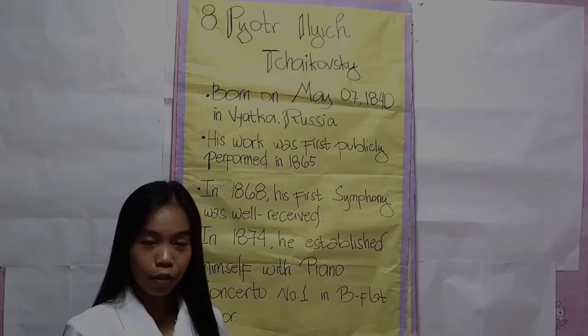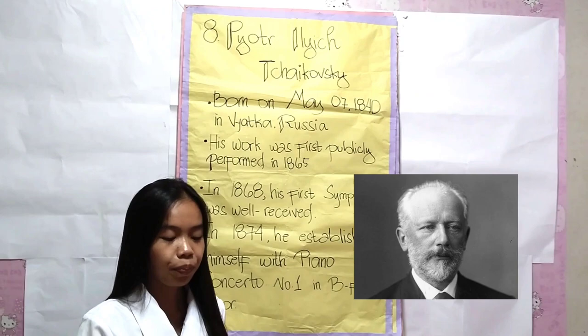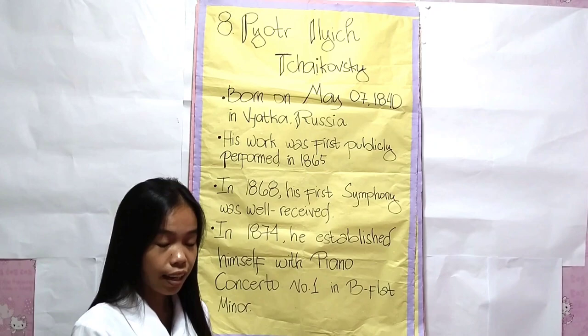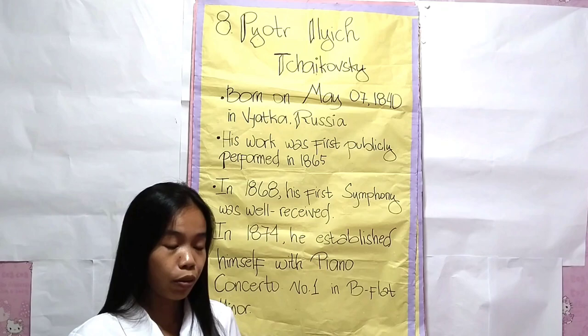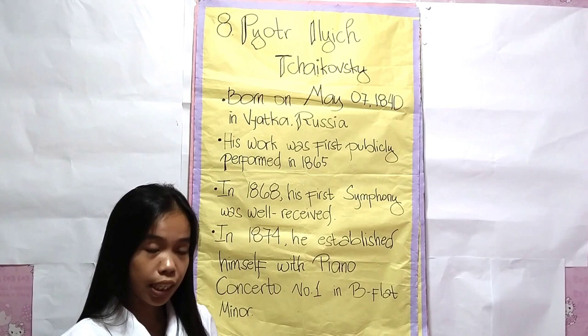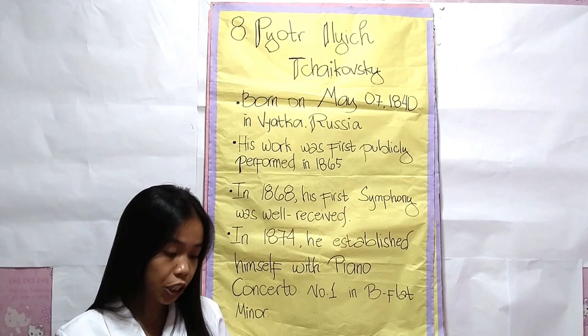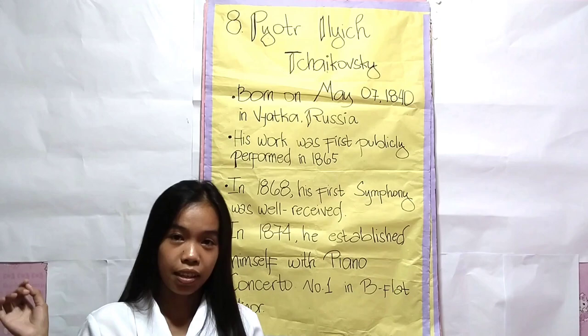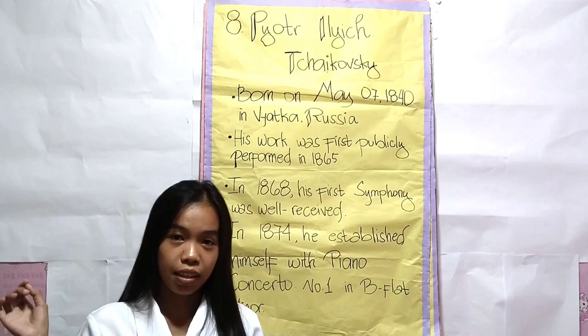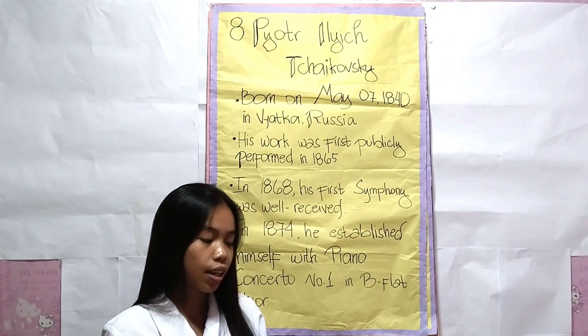One of the musicians of the Romantic period is Pyotr Ilyich Tchaikovsky — some people call him Peter, but in Russian he is said as Pyotr Ilyich Tchaikovsky. He was born on May 7, 1840 and died on November 6, 1893. He wrote some of the most popular concert and theatrical music in the classical repertoire. Swan Lake was Tchaikovsky's first ballet music and one of the most popular ballets of all time.